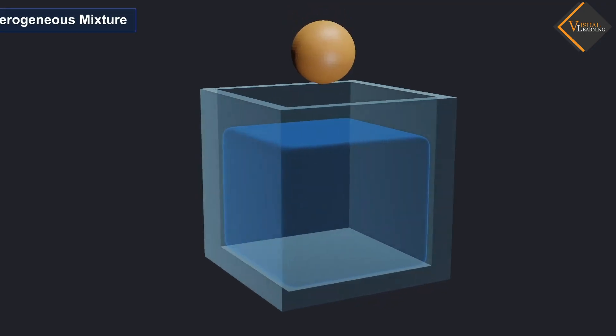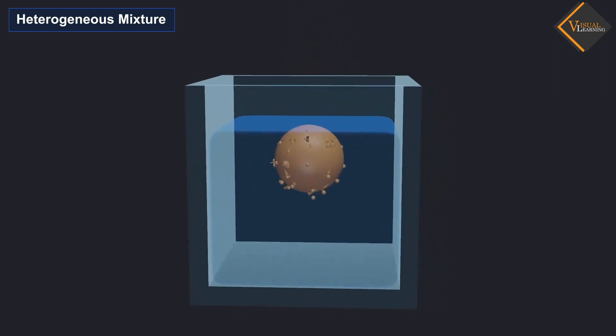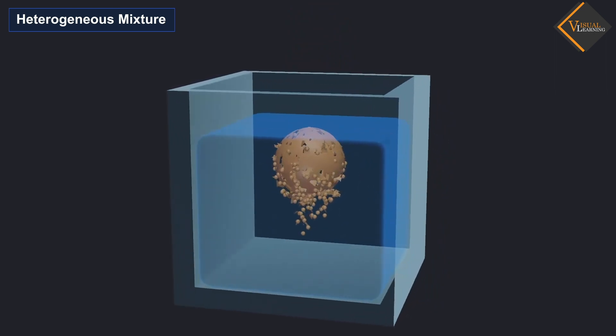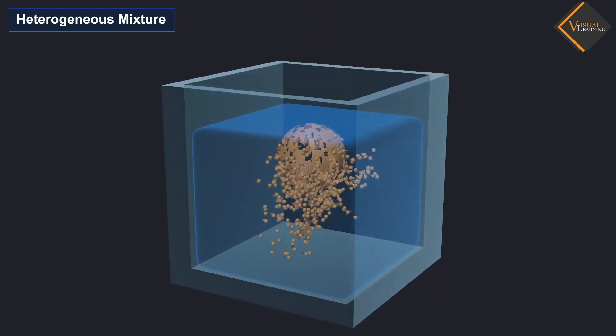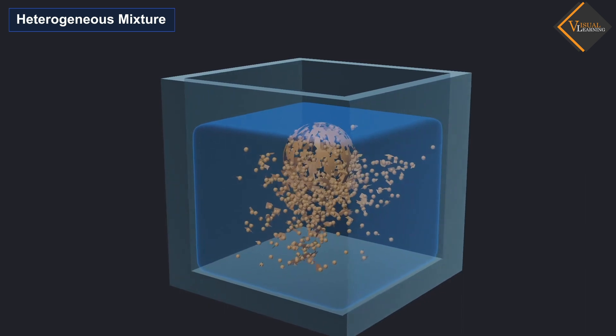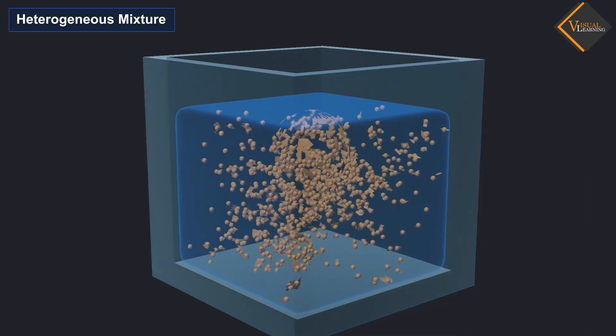Heterogeneous mixture - hetero means different. The mixtures in which the components do not have a uniform distribution throughout the mixture, which means the components are unevenly distributed in the mixture.